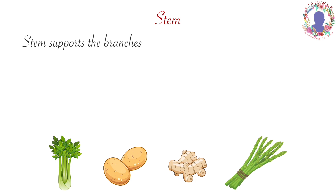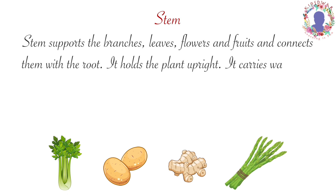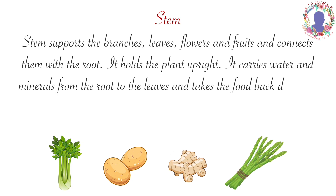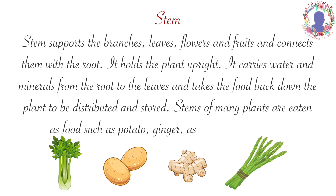Stem supports the branches, leaves, flowers and fruits and connects them with the root. It holds the plant upright. It carries water and minerals from the root to the leaves and takes the food back down the plant to be distributed and stored. Stems of many plants are eaten as food such as potato, ginger, asparagus, celery, etc.